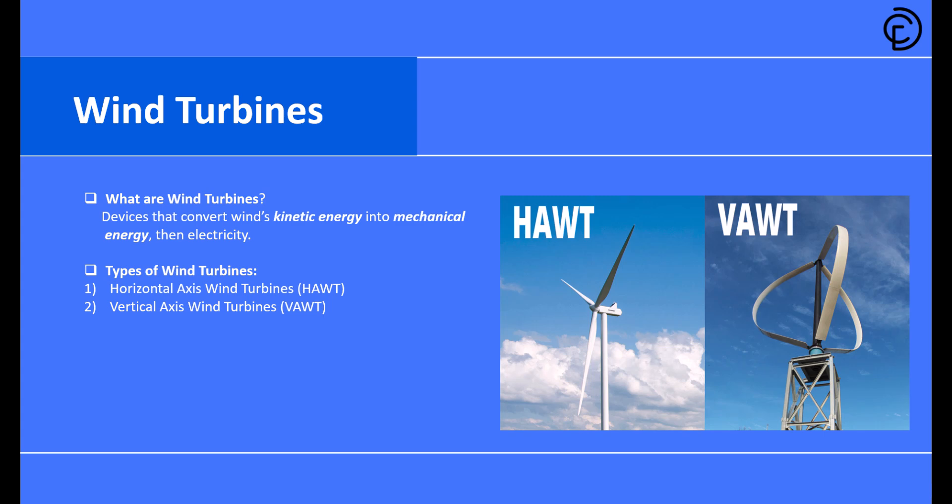There are two main types of wind turbines. First, we have horizontal axis wind turbines, or HAWTs — the traditional windmills you probably picture, with blades spinning around a horizontal axis, commonly seen on wind farms. Second, we have vertical axis wind turbines, or VAWTs, where the blades rotate around a vertical axis. These are the type we'll focus on today, specifically the Savonius design.